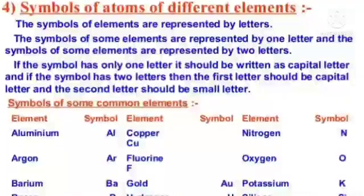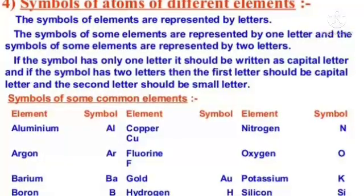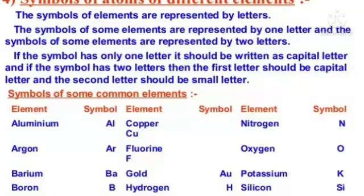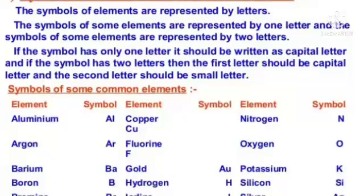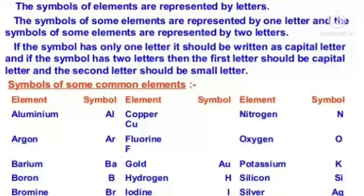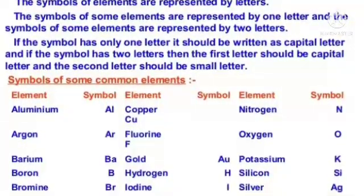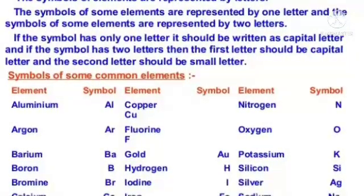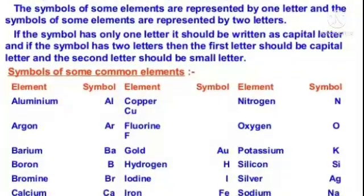Symbols of atoms of different elements are represented by letters. Some elements are represented by one letter and some by two letters. If the symbol has only one letter, it should be written as a capital letter. If the symbol has two letters, the first letter should be capital and the second should be a small letter. Observe the symbols of some common elements.